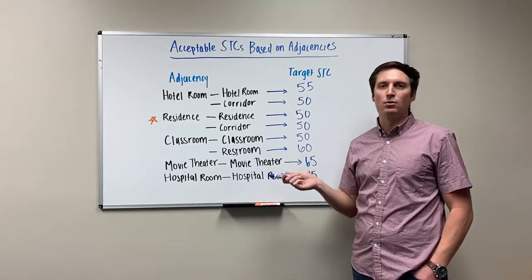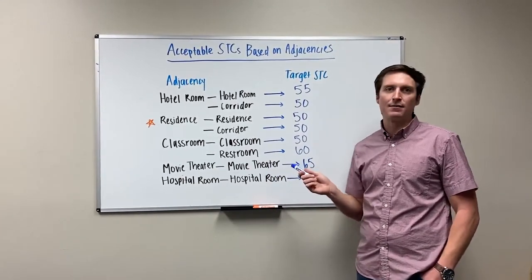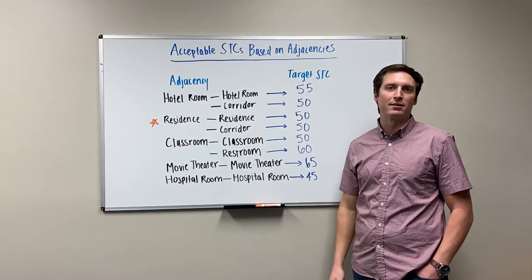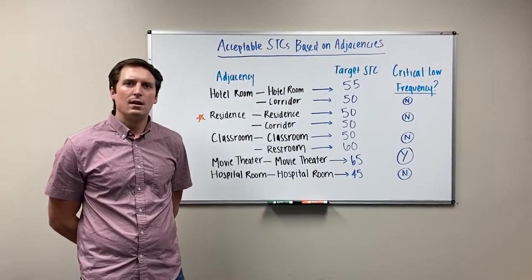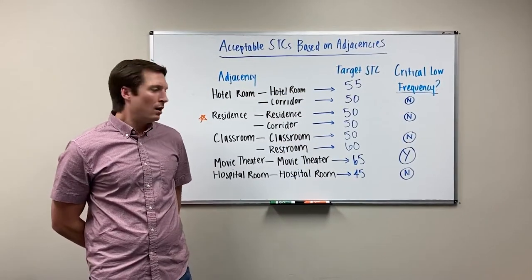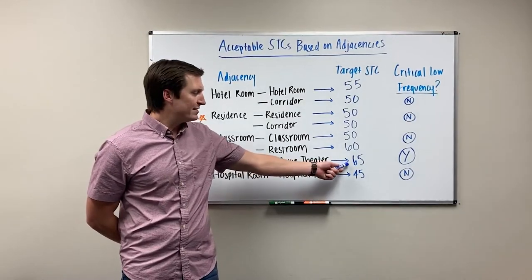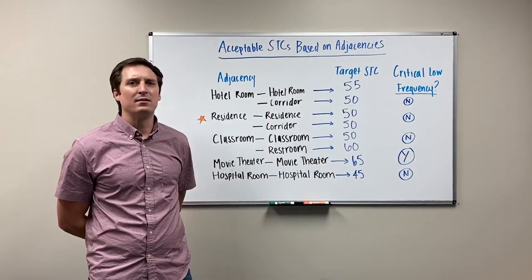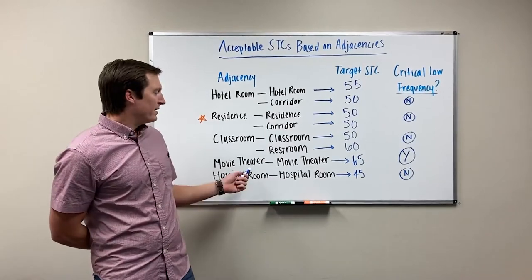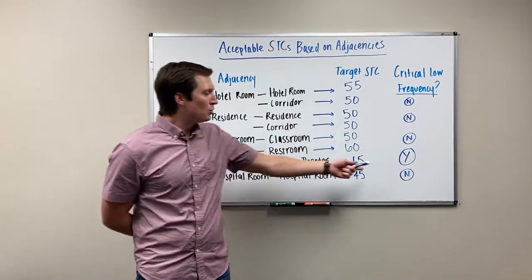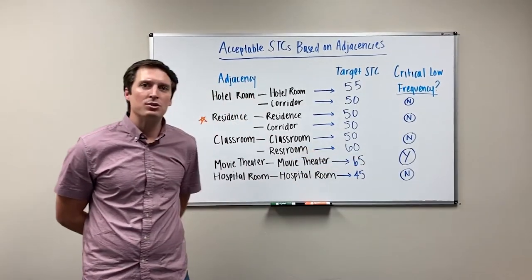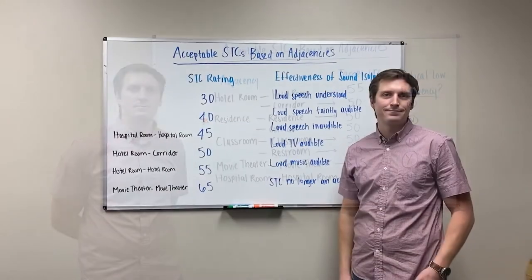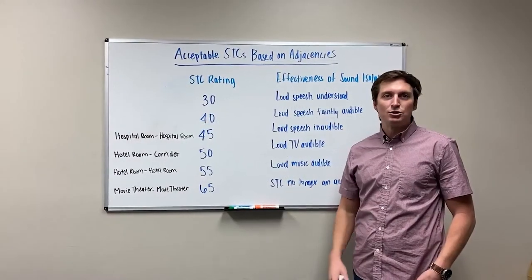Movie theaters are a special case where STC needs to be 65 or higher, and low frequency is particularly important. Once you get above STC 60, STC alone isn't a good enough measure. Movie theaters need good low-frequency attenuation so that you don't hear rumbling from adjacent auditoriums.